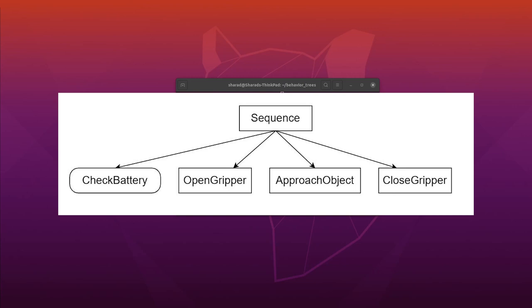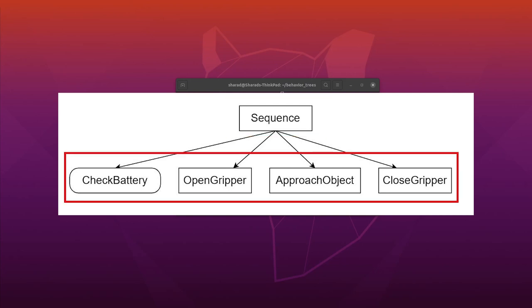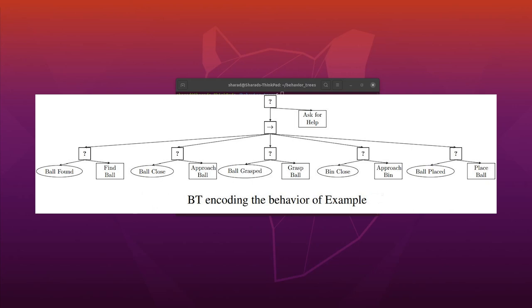This is the behavior tree we built in part two. It had one sequence node, four leaf nodes — one condition node and three action nodes — simple. Now, this is the behavior tree we will build in this video, which is for a grasp-and-place robot. This is a dummy application and we'll build it with dummy functionality in software using the BehaviorTree.CPP library again. This behavior tree was also discussed in the first part of the series, so please check that out if you need the background.